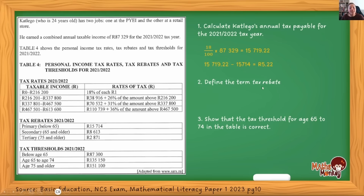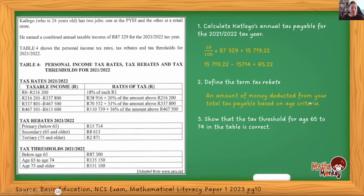Question two: define the term 'tax rebate.' Remember, mathematical literacy has two sections — the mathematical part and the literacy part. The literacy part requires you to explain and describe situations or define terminology. Whenever you answer these questions, start with a capital letter and end with a full stop. You can say: 'An amount of money deducted from your total tax payable based on age criteria' — since we know it applies below 65, and secondary and tertiary rebates are all based on age.